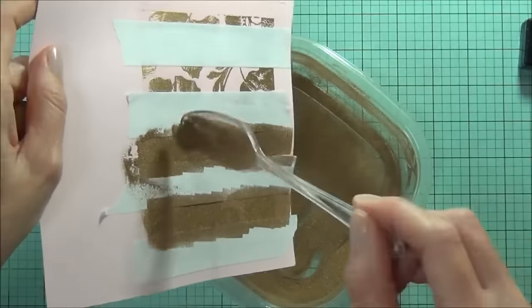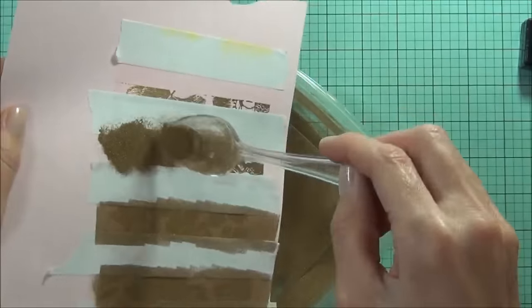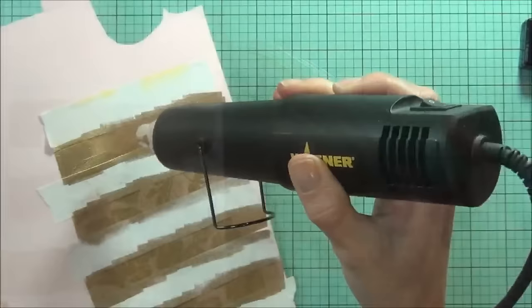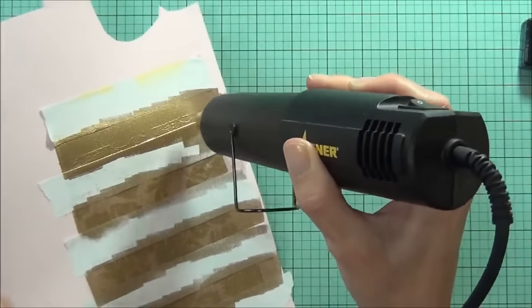I'll just add some more embossing powder, it's the same gold I'm using again, and then I can hit it with my heat tool. And look at that, isn't that gold just the prettiest thing?